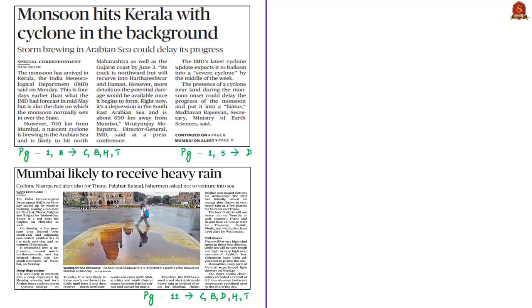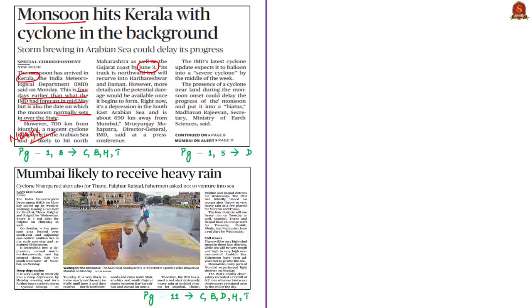Let us move to the next news article, which talks about the monsoon. According to this article, the IMD announced that monsoon arrived in Kerala on June 1st — four days earlier than the forecasted date of June 5th. However, June 1st is the date on which monsoon normally sets over Kerala. The IMD also updated about a nascent cyclone named Nisarga developing in the Arabian Sea, likely to hit the coastline of northern Maharashtra and southern Gujarat by June 3rd. The presence of a cyclone near the landmass during monsoon could delay and block the progress of monsoon.